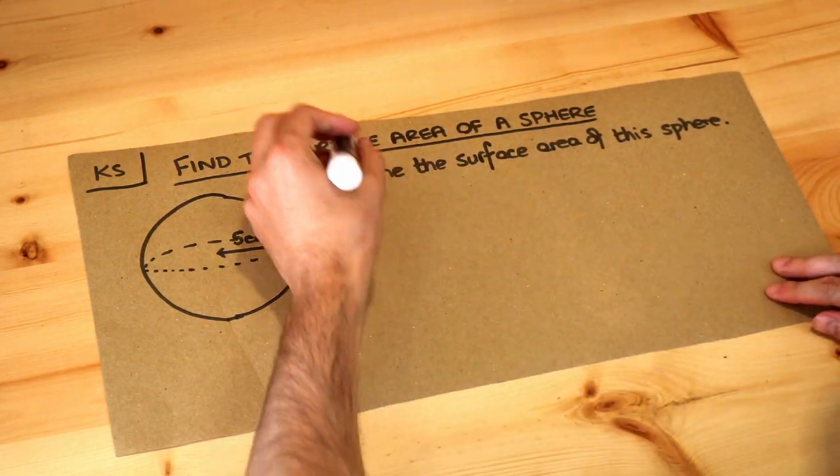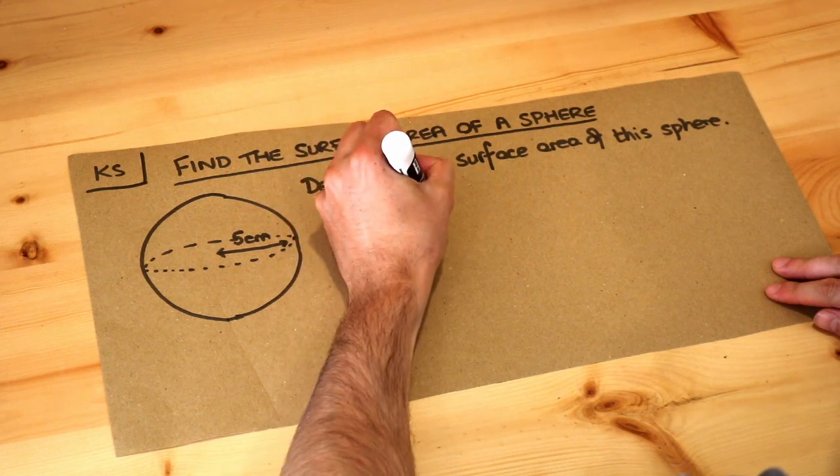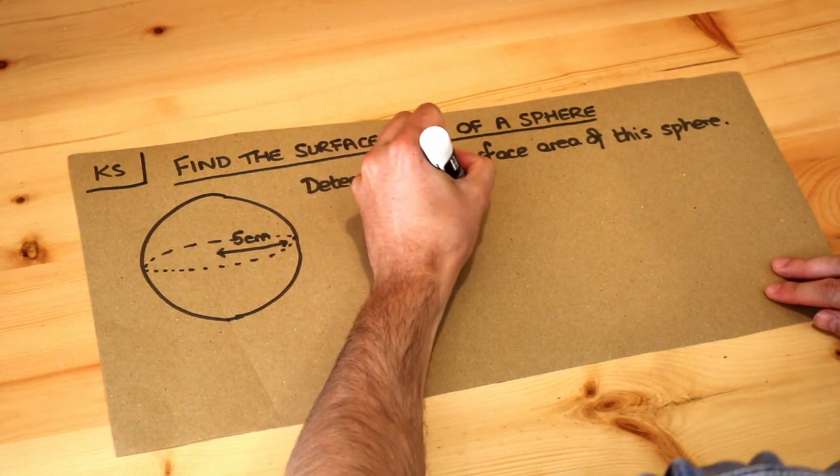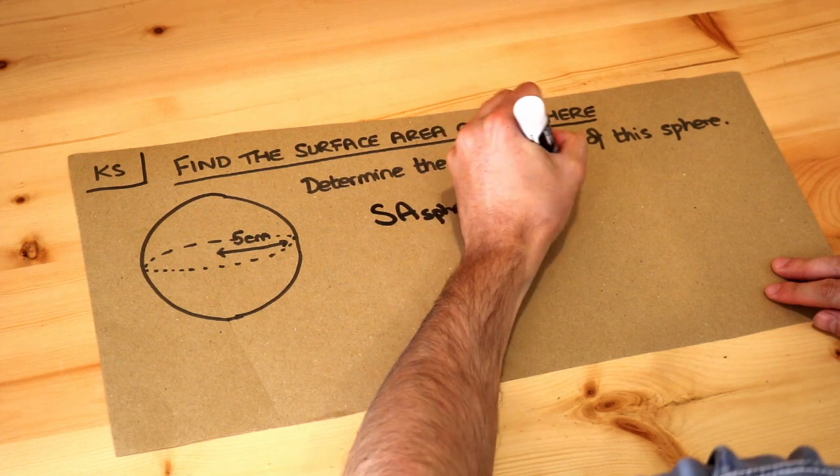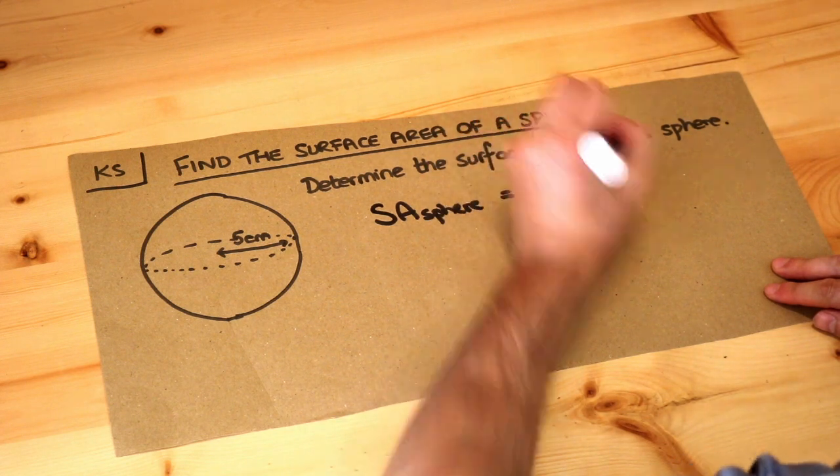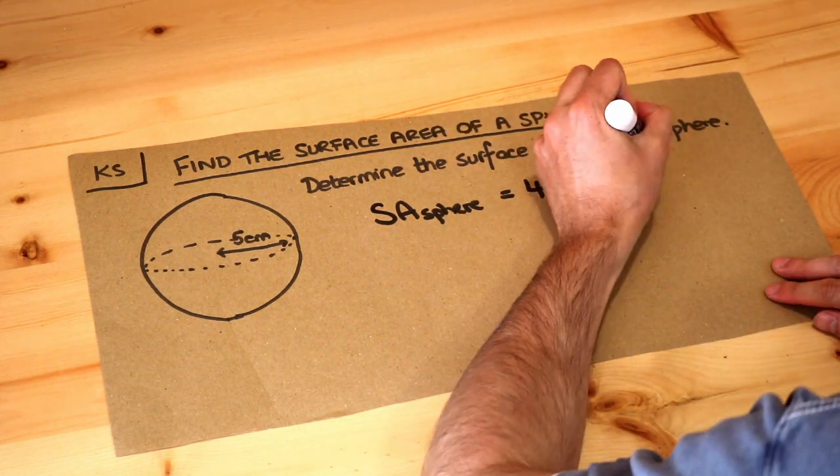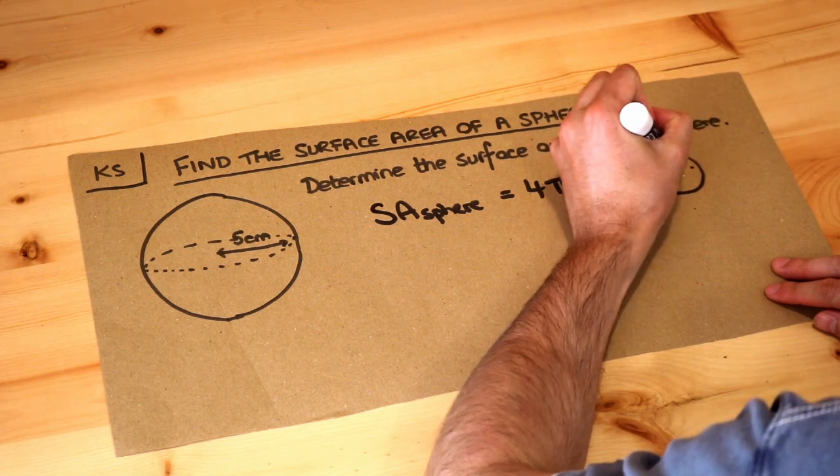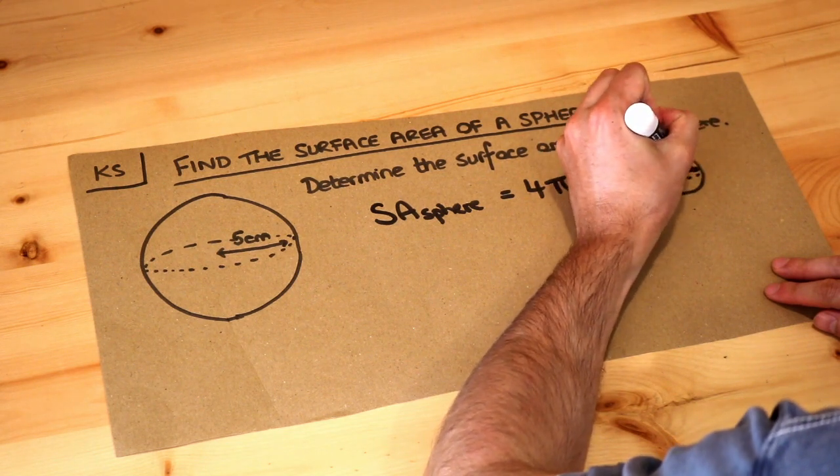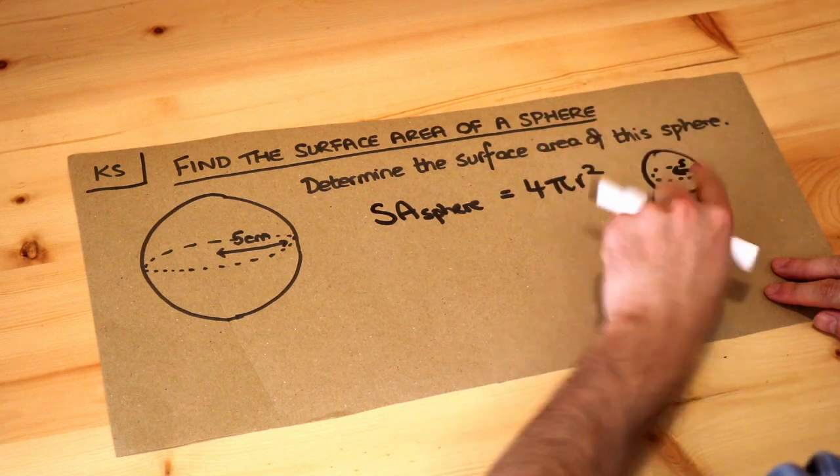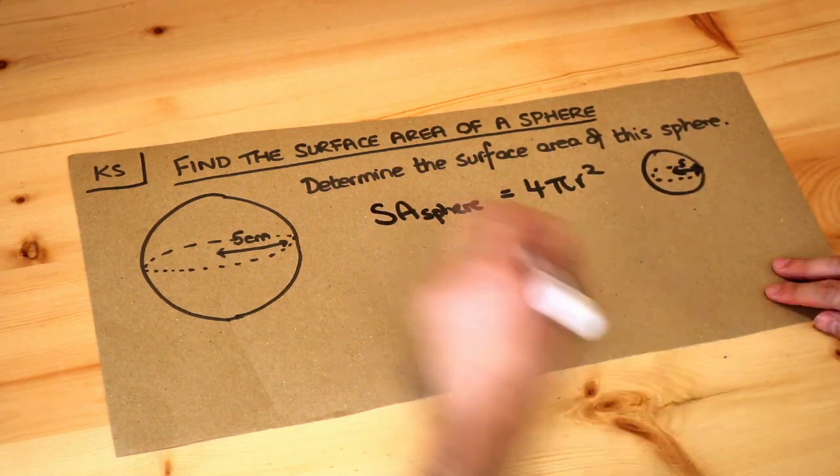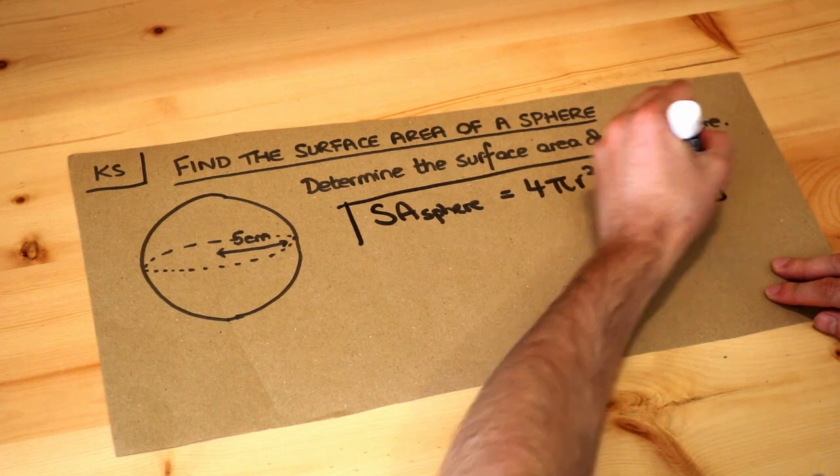Now the formula for the surface area of a sphere, I'm just going to write SA for surface area of a sphere, the formula is 4πr². That means 4 times π times r squared, where r is the radius of the sphere. So the distance between the center of the sphere and the surface of the sphere. So we're just going to use this formula.